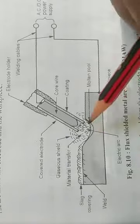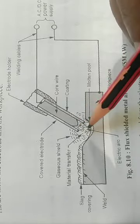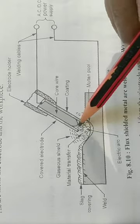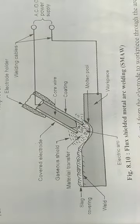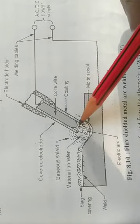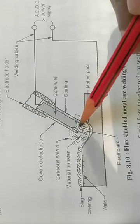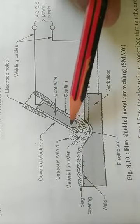The heat present in the arc melts the electrode and workpiece. The material droplets are transferred from the electrode to the workpiece through the arc and are deposited along the welded joint.